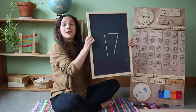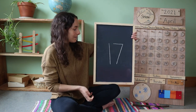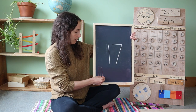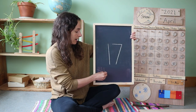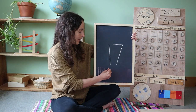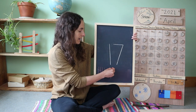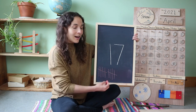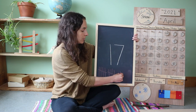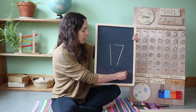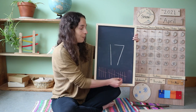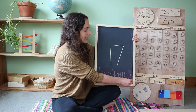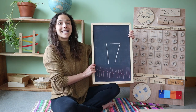Will you count 17 tally marks with me? One, two, three, four, five goes across, six, seven, eight, nine, ten goes across, eleven, twelve, thirteen, fourteen, fifteen goes across, sixteen, seventeen. 17 tally marks.